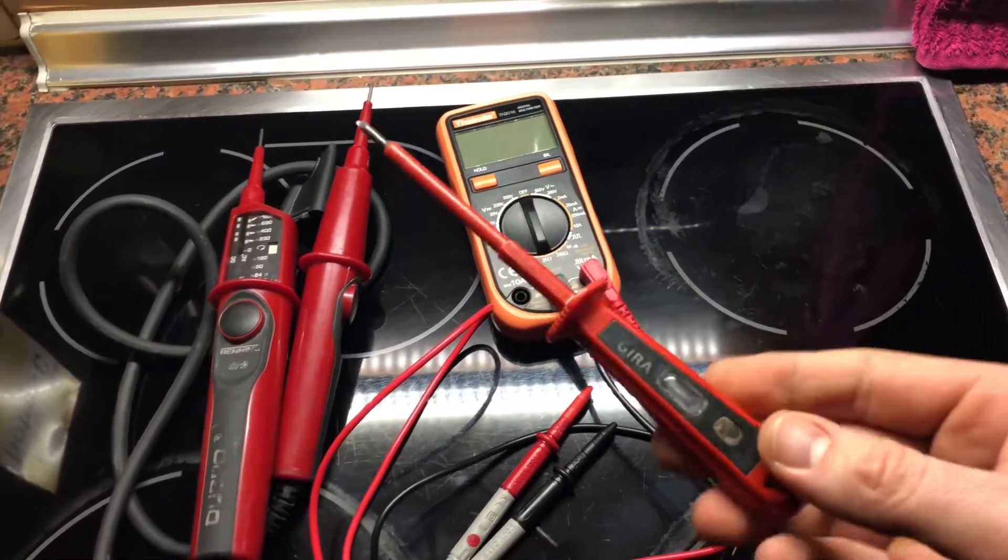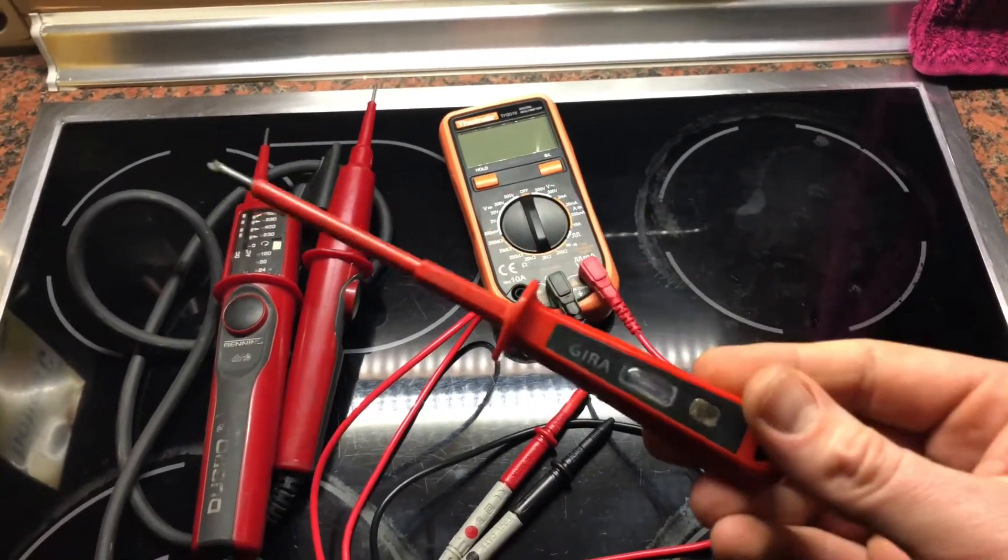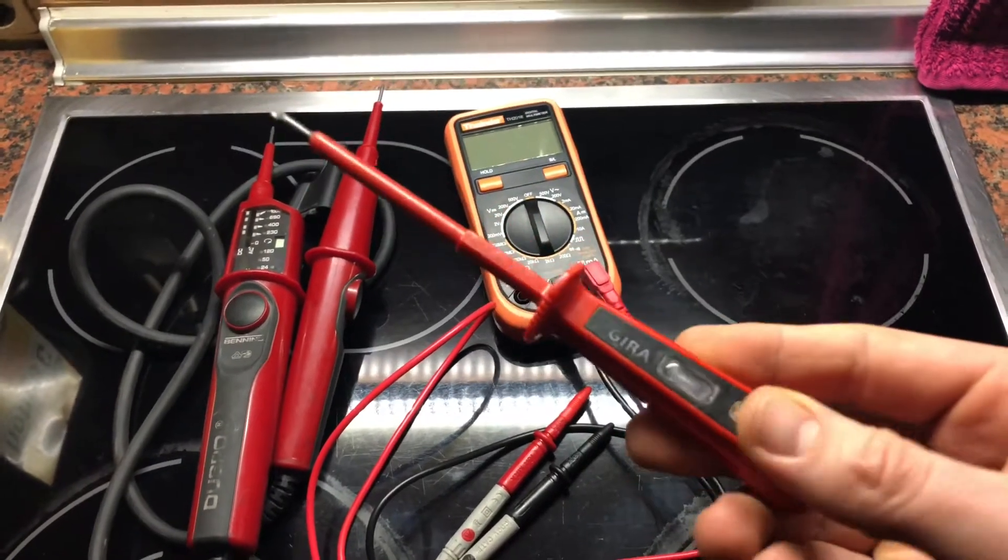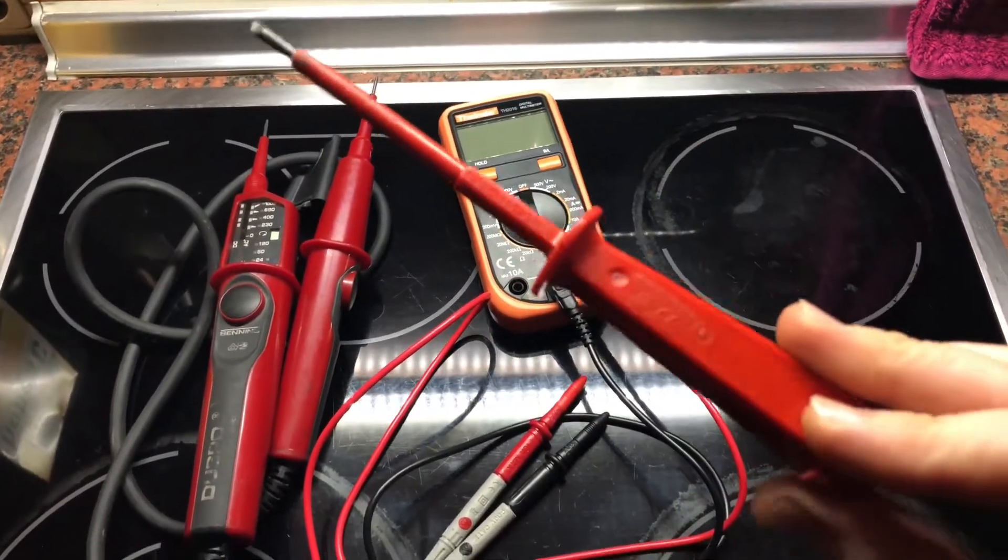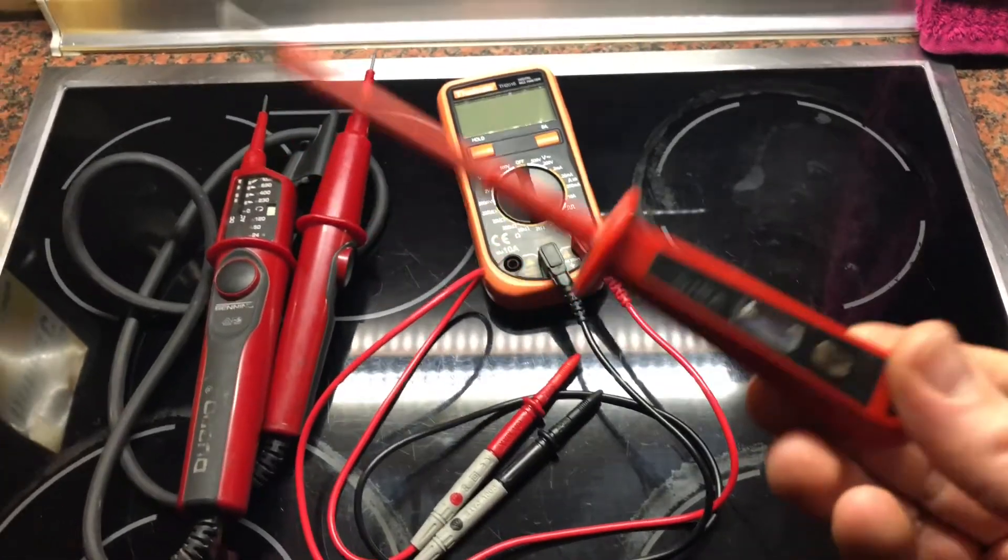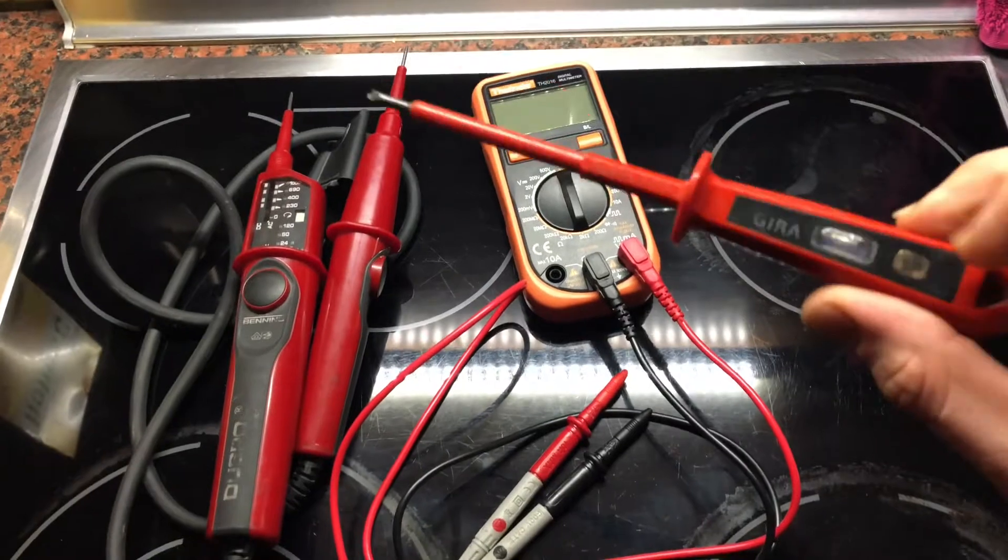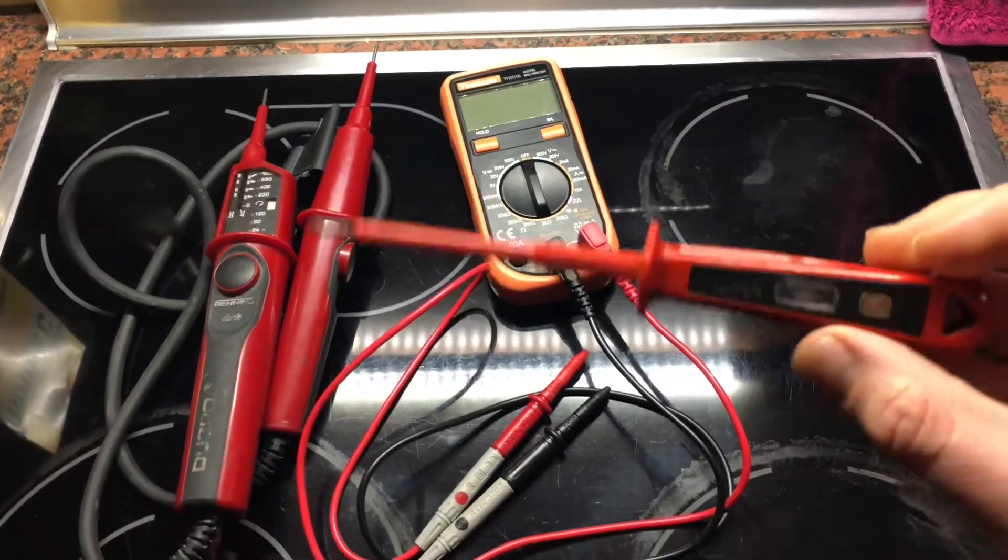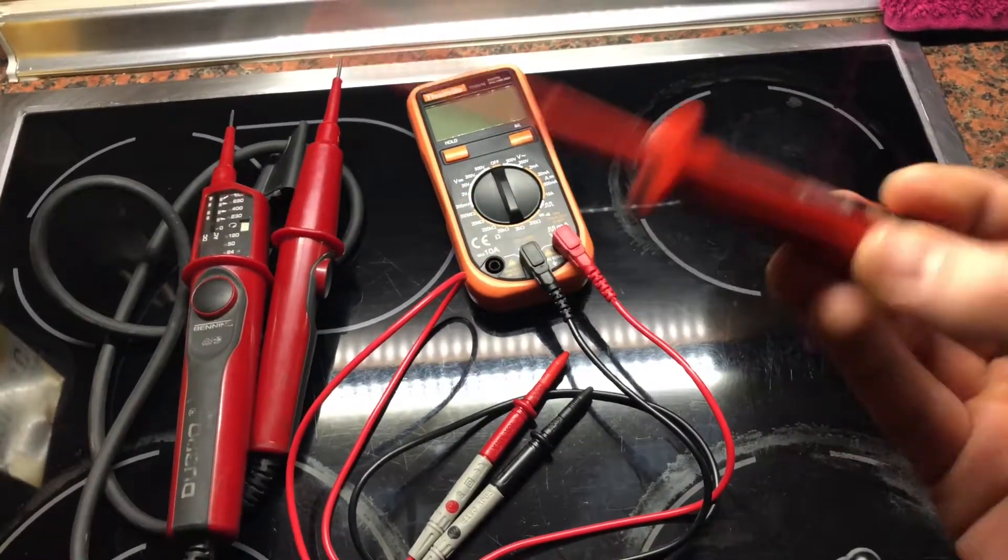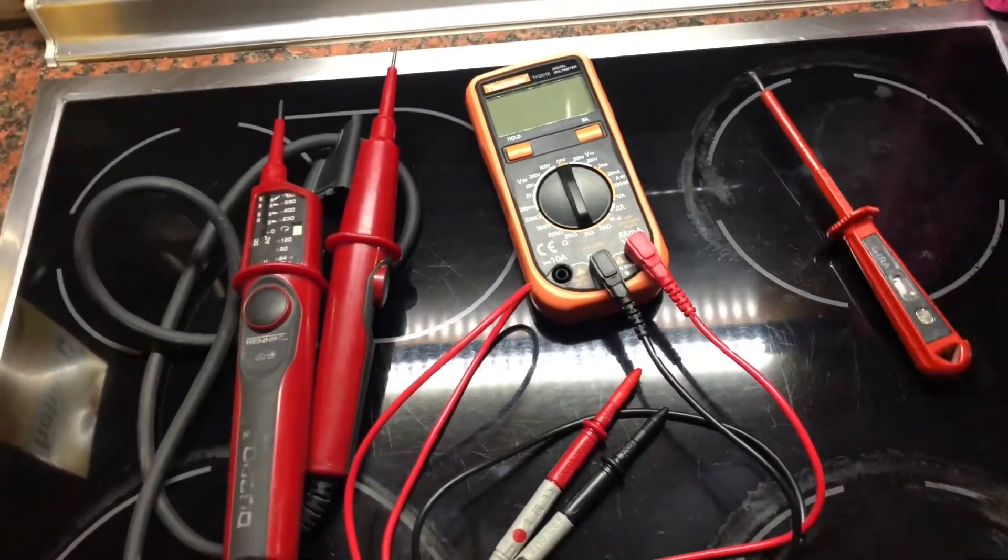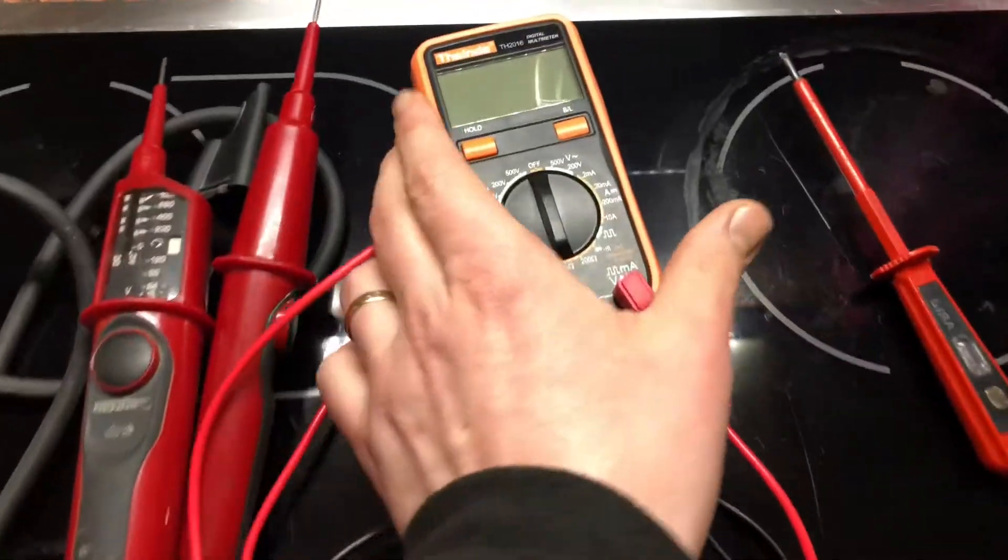That means we have a contact neon light stick, as you can see, in screwdriver shape. And this is the cheapest way to check the energy power, of course. And this is, but it's the most dangerous way.